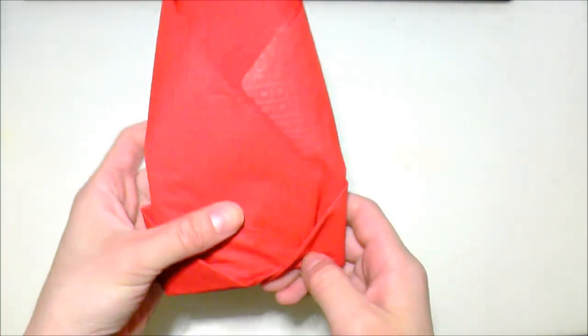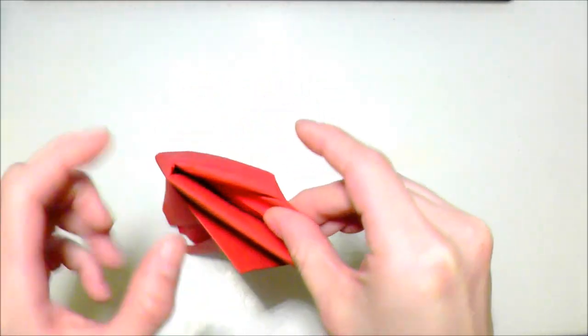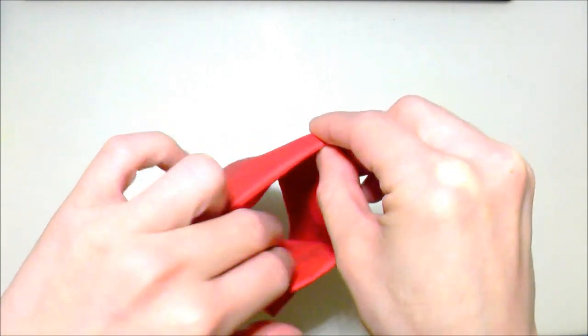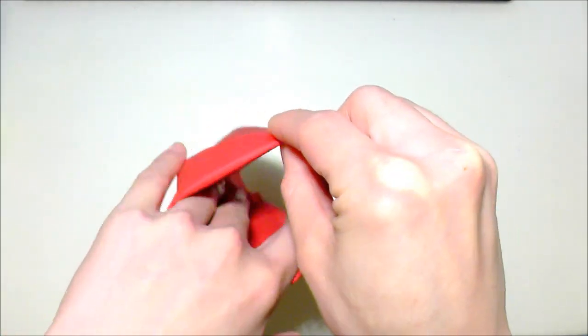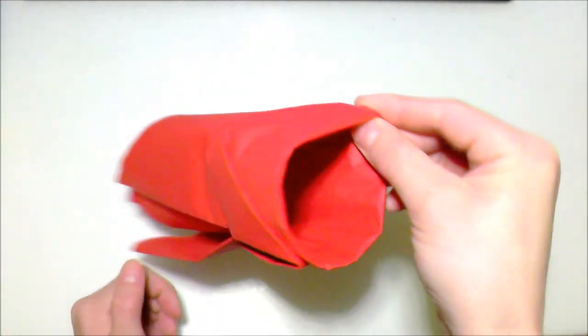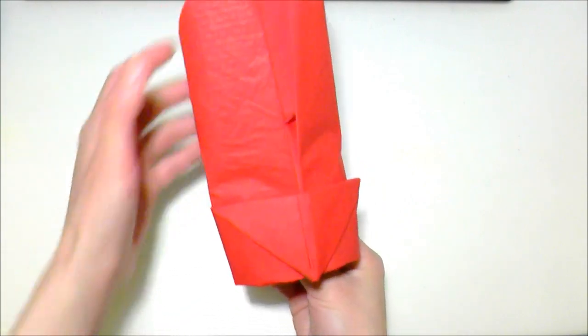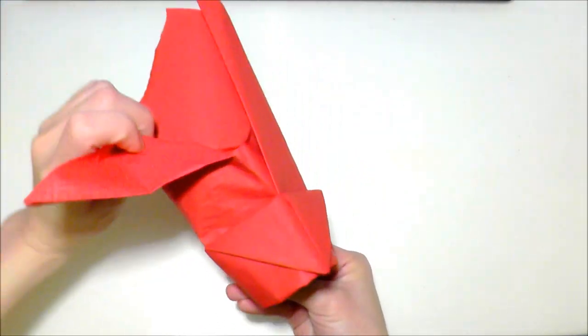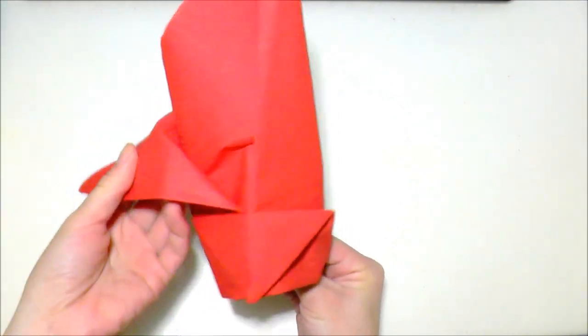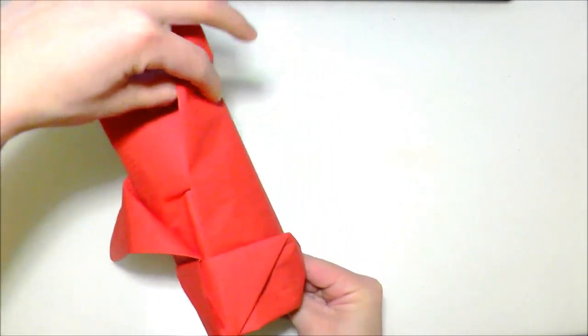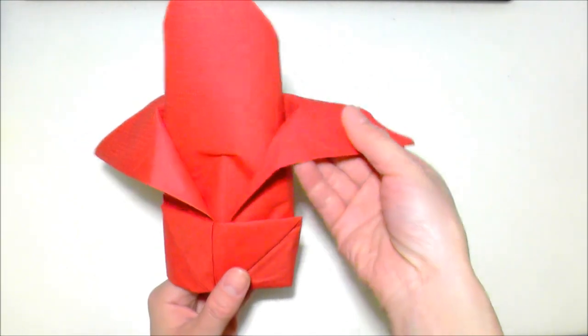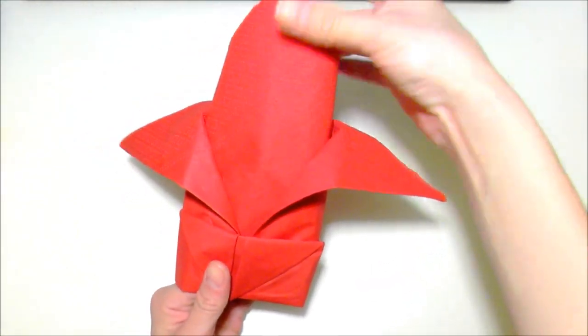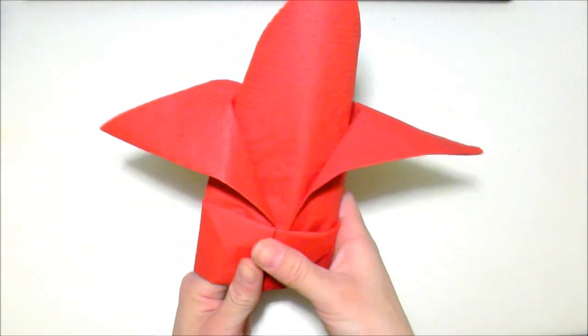Then we're going to round out the bottom so that it stands up. In front it should look like this. We're going to take this left flap and fold it down, and also take this right flap and fold it down as well.